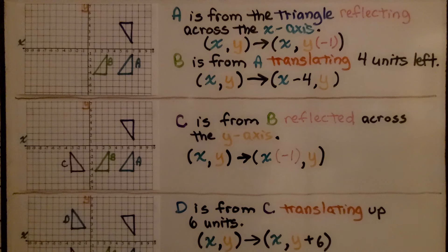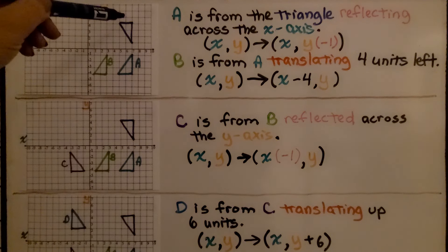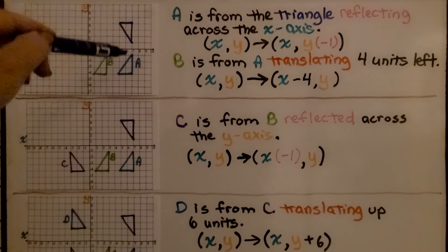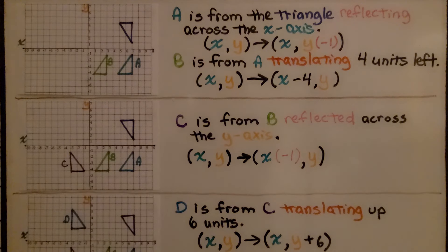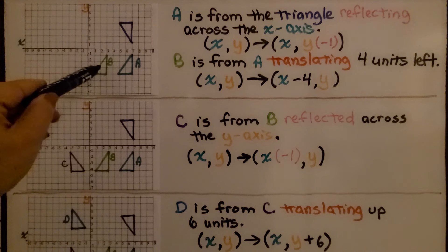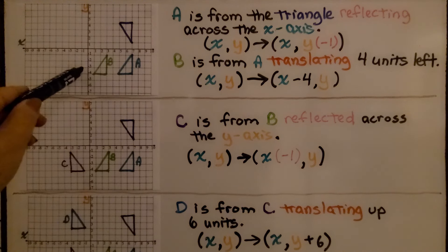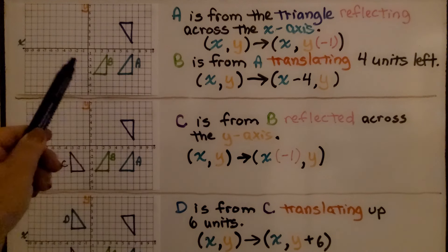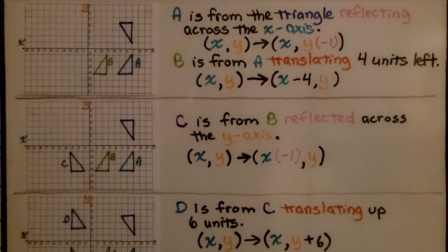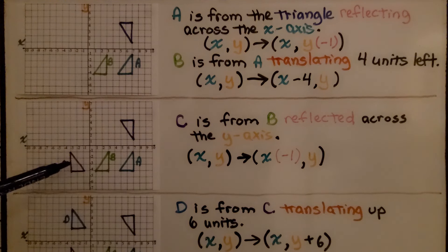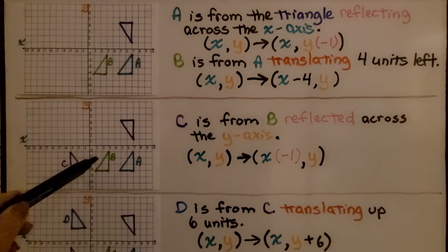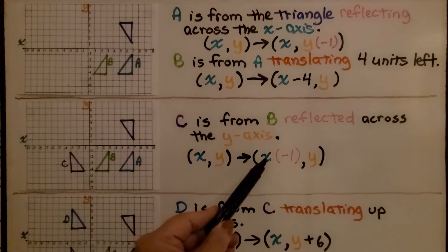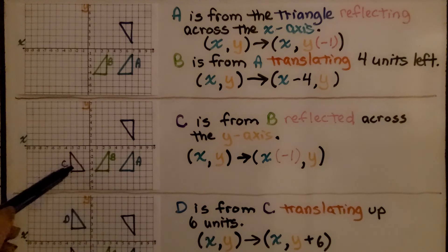We're going to walk through a sequence of several transformations. We're starting with this right triangle right here, and A is from this triangle reflecting across the x-axis. Since we reflected across the x-axis, we multiplied the y values by negative 1. This B triangle is from A triangle translating 4 units left. Since it was 4 units left, we have x minus 4 for our x value. Now we have triangle C over here. C is from B reflecting across the y-axis. Since it reflected across the y-axis algebraically, we multiplied the x values by negative 1.